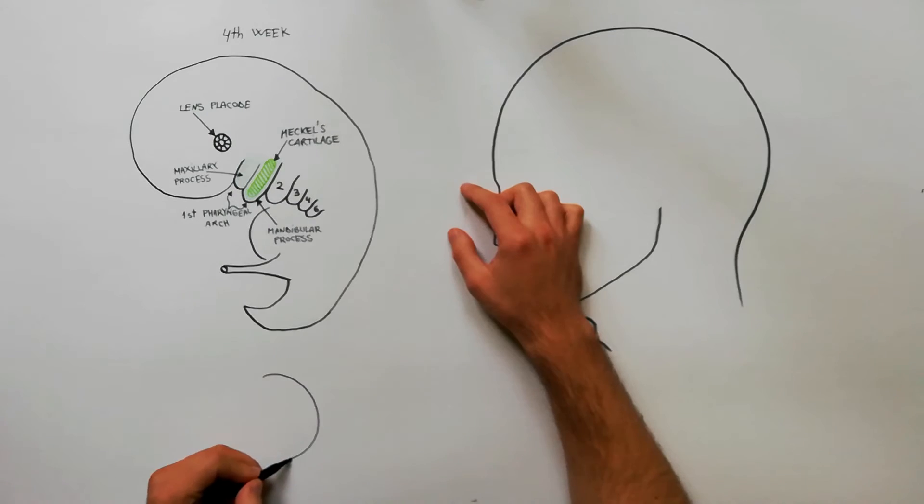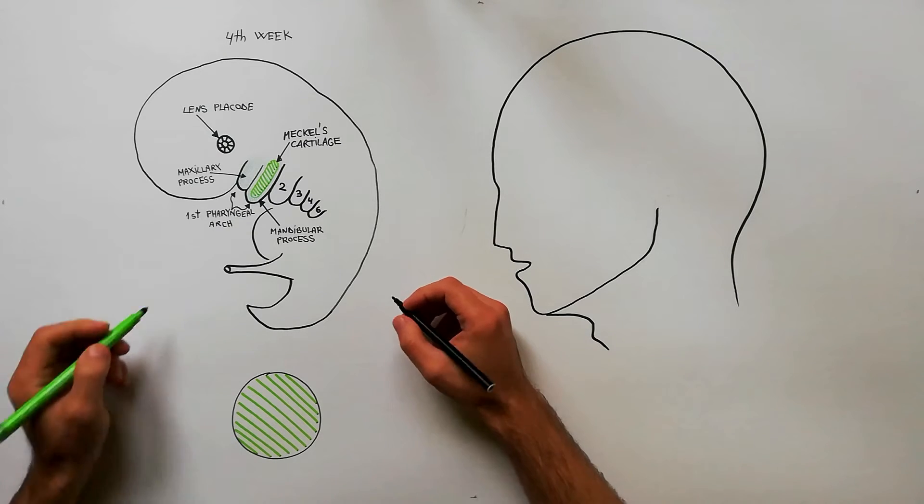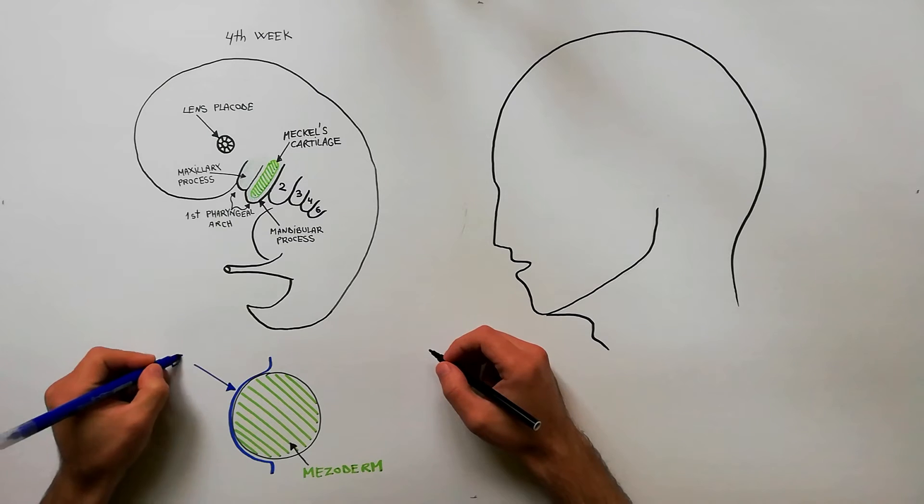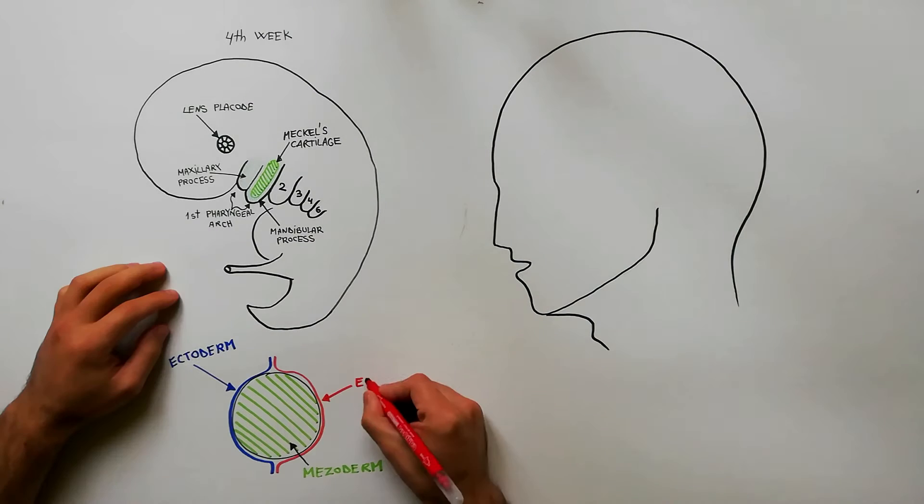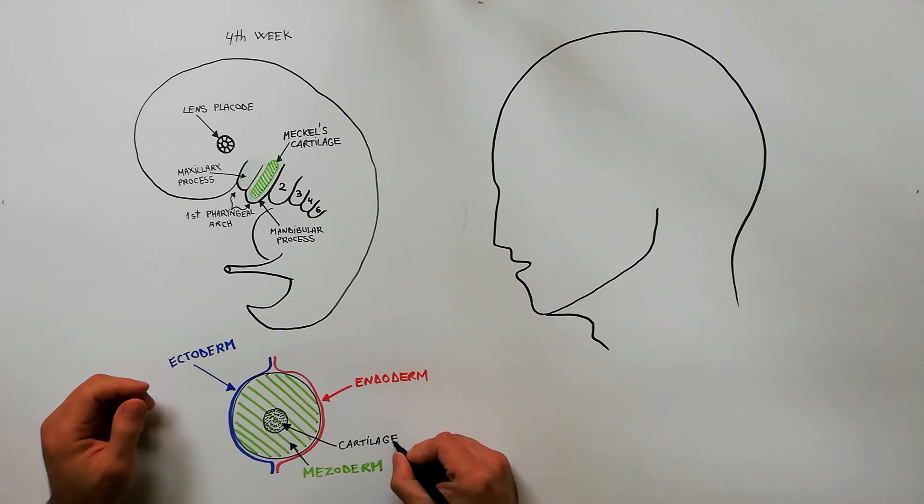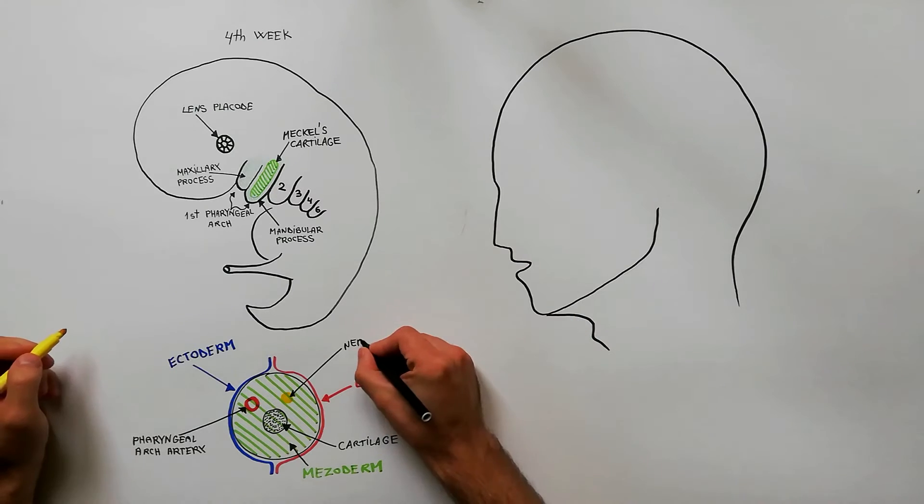A typical pharyngeal arch consists of the following components: a core of mesoderm covered externally by ectoderm and internally by endoderm, a cartilaginous bar, a pharyngeal arch artery and a nerve.